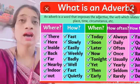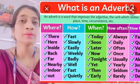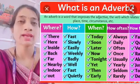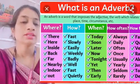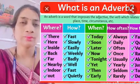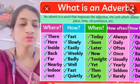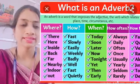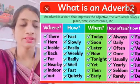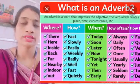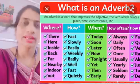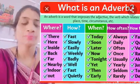Next is how — matlab koi bhi action kaisa hua hai. That is: calmly, beautifully, excitedly, happily, joyfully, sadly, sloppily, etc.